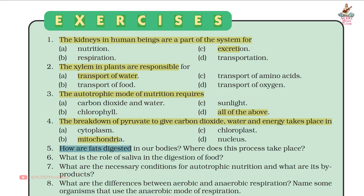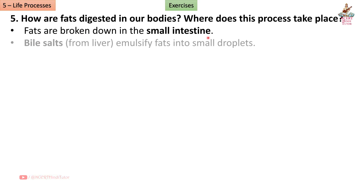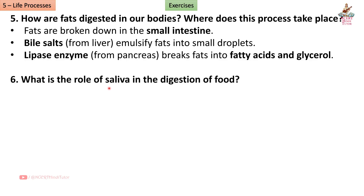Q4 — The breakdown of pyruvate to give carbon dioxide, water, and energy takes place in: Answer B, Mitochondria. Question 5: How are fats digested in our bodies? Where does this process take place? Answer: Fats are broken down in the small intestine. Bile salts from the liver emulsify fats into small droplets. Lipase enzyme from the pancreas breaks fat into fatty acids and glycerol.